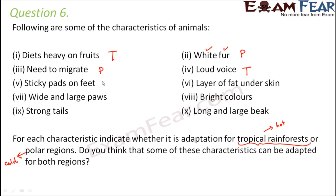Fifth: sticky pads on feet. This would help animals in the rainforests — for example, climbing trees. Sixth: a layer of fat under the skin. Fat provides insulation and helps to keep an animal warm, so this is an adaptation for polar regions. Seventh: wide and large paws. These help animals move and walk on snow, so this is again an adaptation for polar regions.